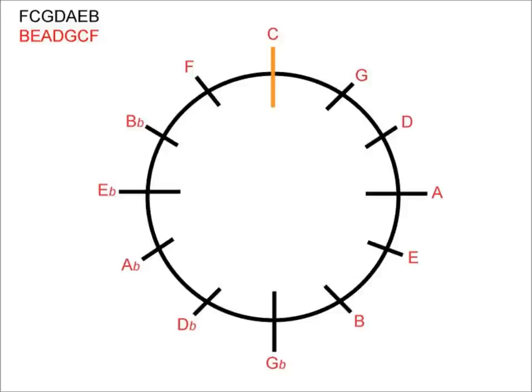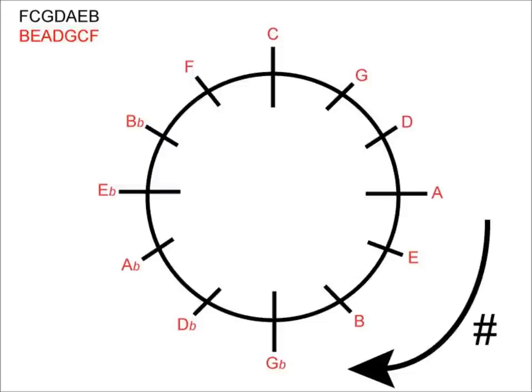If you already know how to create and use the circle for major keys, let's have a look at how we can use it for key signatures in minor keys. You'll recall that for major keys we use C on our circle of fifths as the main point of reference, as C major has no sharps or flats in its key signature. For minor keys, we use A as the central point of reference because A minor does not have any sharps or flats in its key signature. Therefore, all the keys on one side of A will be keys with sharps, whereas all the keys on the other side of A will be keys with flats.